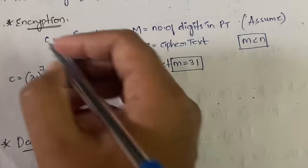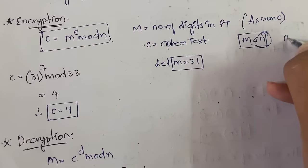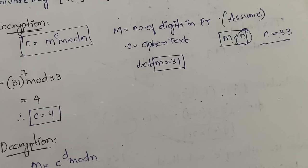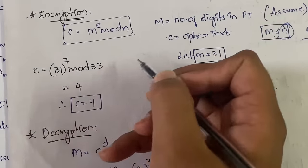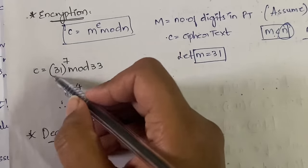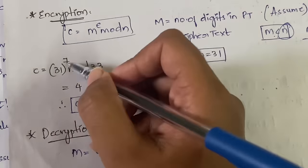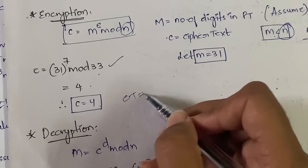For encryption, the formula is C = m^e mod n, where C is ciphertext and m is plaintext. The value of m must be less than n, so less than 33 in our example. We assume m = 31. Then C = 31^7 mod 33. Since a calculator is allowed in the exam, you can compute this directly. The result is C = 4. So our ciphertext is 4.